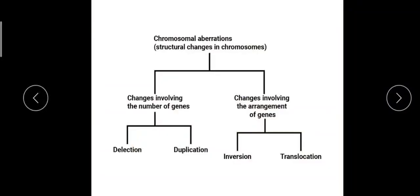So what is chromosomal aberration? Any change in the chromosomal structure we call it as chromosomal aberration, or another name is chromosomal variation. Any variation from the normal conditions we call it as aberration. Chromosomal aberrations may be in two ways: either due to variations in the number of genes, or due to variation in their structure.